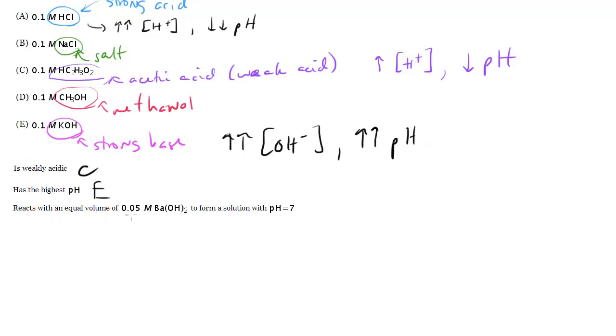Reacts with an equal volume of 0.05 molar Ba(OH)2 to form a solution with pH 7. So we're talking about neutralization here, or titration. So we have 0.05 molar Ba(OH)2, so what we're trying to neutralize here is the OH, right? So this is basic, and since we have two OH particles, or two OH ions per one molecule, that means we have a concentration of 0.1 molar OH minus in this situation, right?